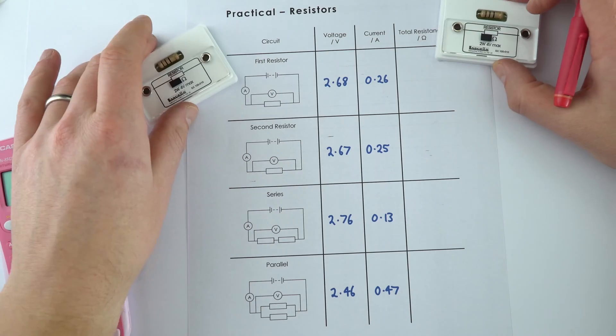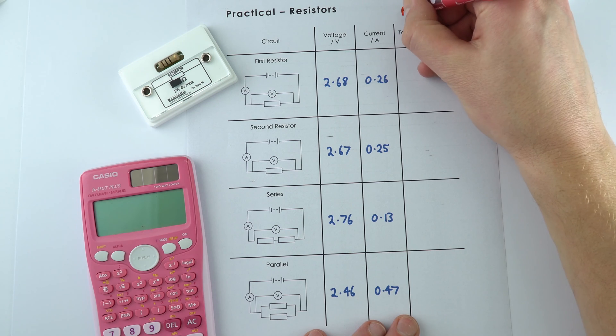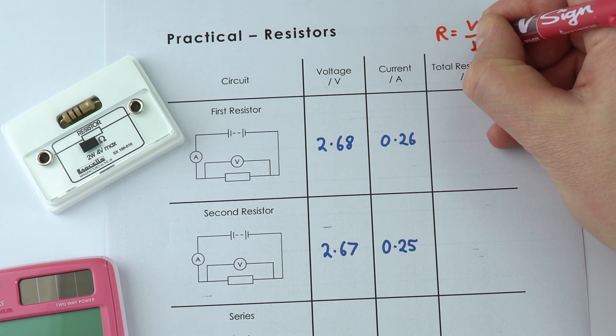So these are the resistors that we took some data about. Now we can work out the resistance by using the equation that says R is equal to V divided by I.